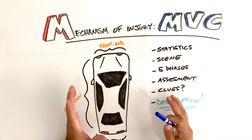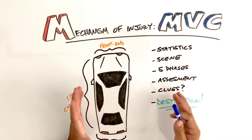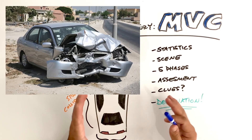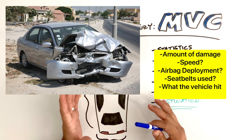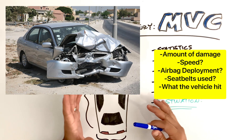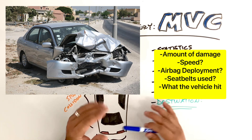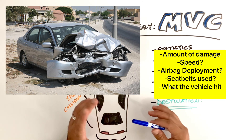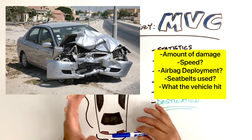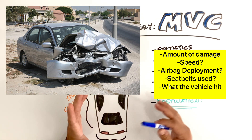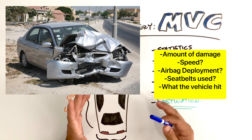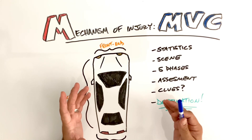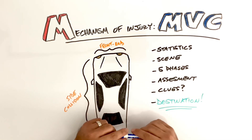A lot of the times, just looking at a scene, you can tell the amount of damage that's been done to a car with kinetic energy. You can see different deformities to the steering column or anything else. It's going to clue you into what potentially has hurt our patient and how we're going to treat that patient.